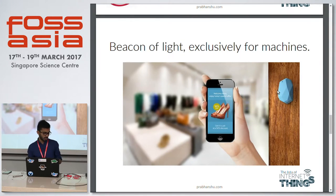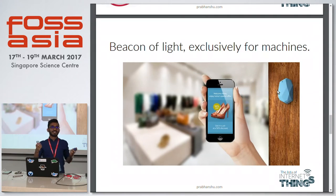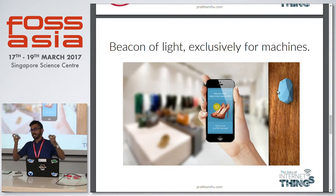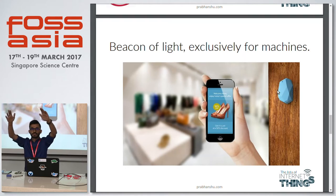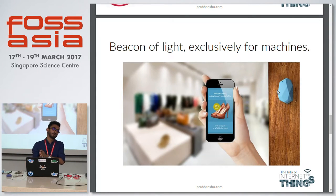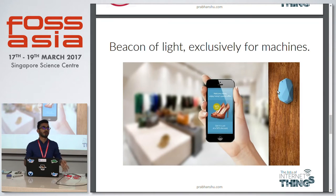Beacons are Bluetooth low energy devices. These are small Bluetooth devices. What they do is throw unique IDs around you and they don't need a connection for your device to get connected, so they need less power. They're like a lighthouse — just beaming light out, a beacon of light exclusively for machines. They tell devices their unique ID and where they are. If your application knows the unique ID assigned to a particular place, the device knows where you are. There are interesting implementations worldwide in every industry.